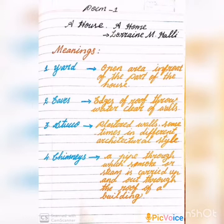First, I will say the meaning of some words. Listen carefully. First one: Yard. Yard means open area in front of the part of the house. Second one: Eaves. Eaves means edges of roof that throw water clear of walls.